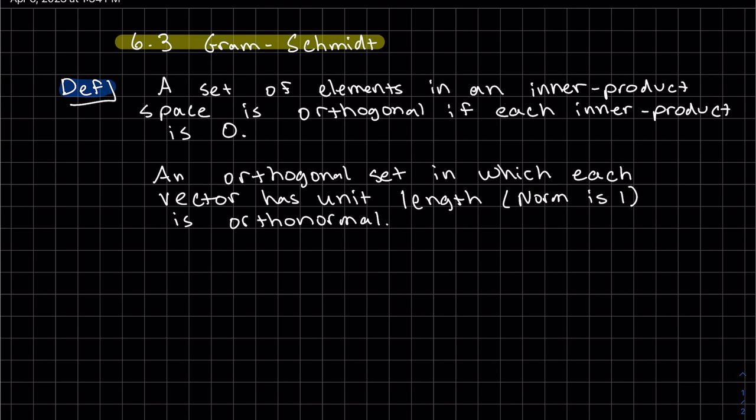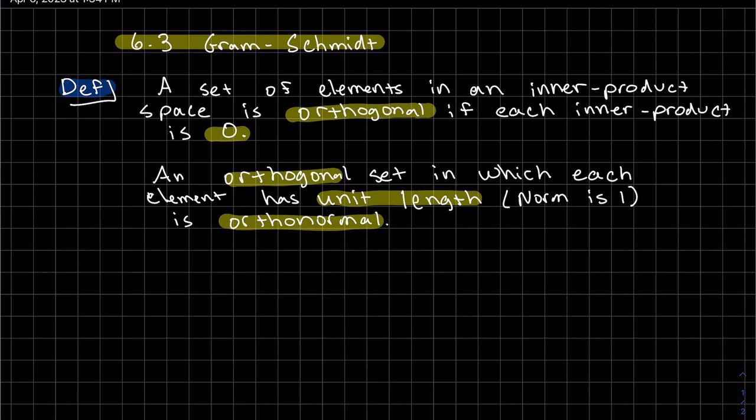We're going to start off with some definitions. A set of elements in an inner product space is orthogonal if each inner product is zero. Also, if we have a set and the set is orthogonal, and every element has unit length (the norm is 1), it's called orthonormal. So we've got orthonormal if it's orthogonal and has unit length of 1, and orthogonal if only the inner products are zero.